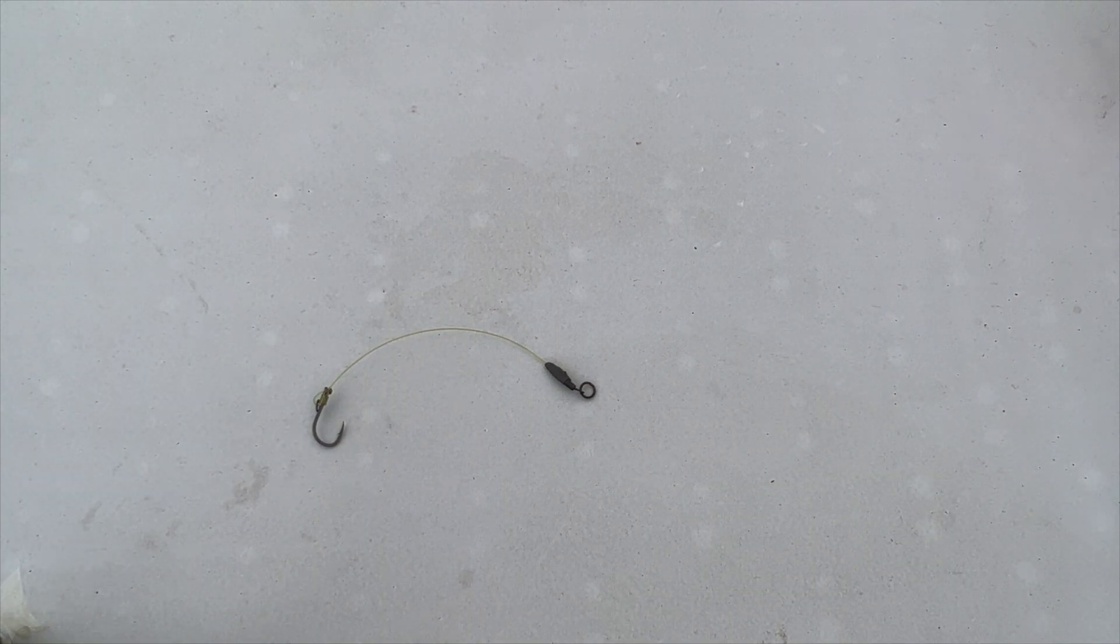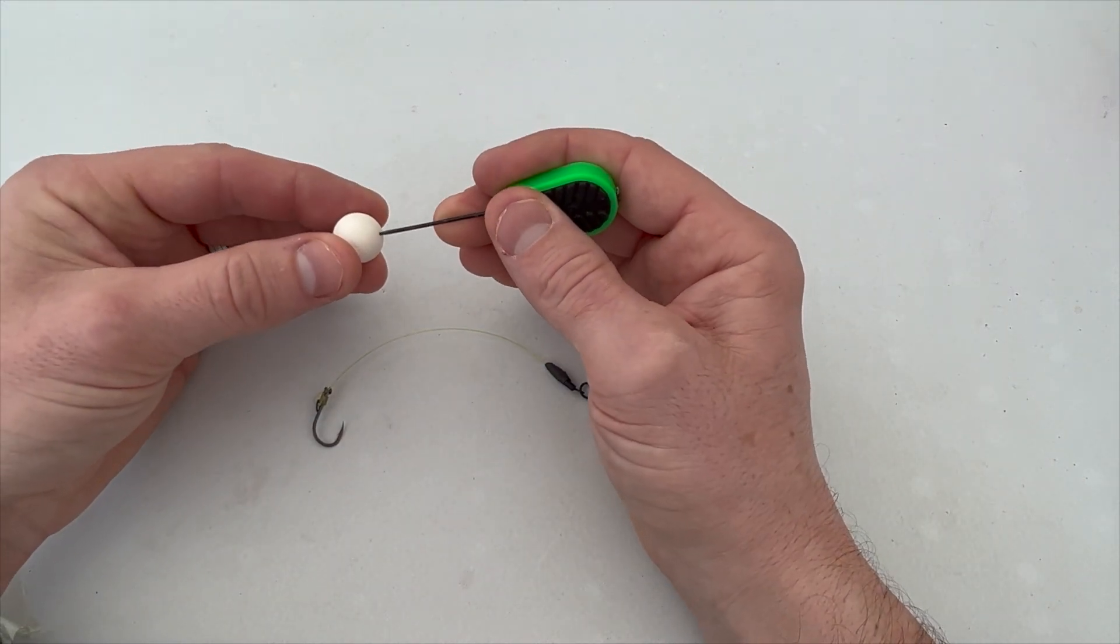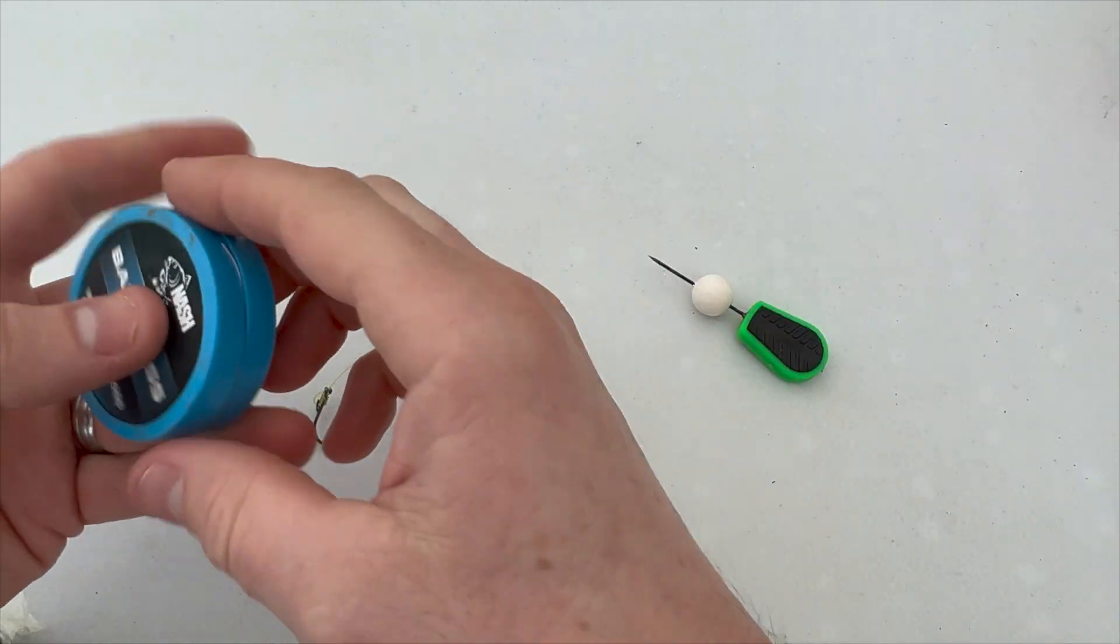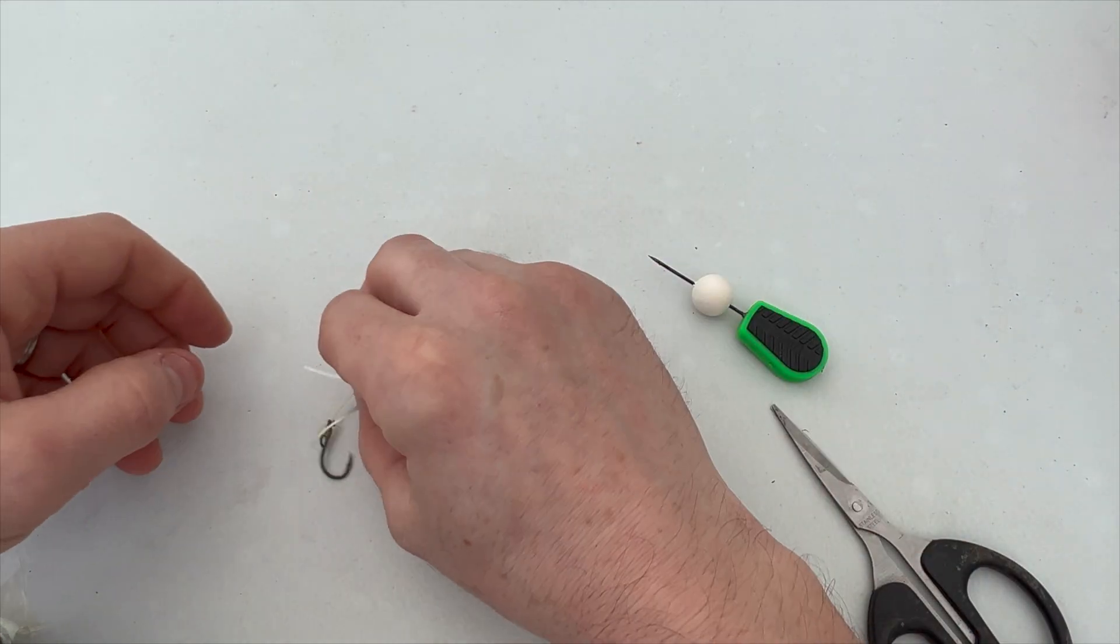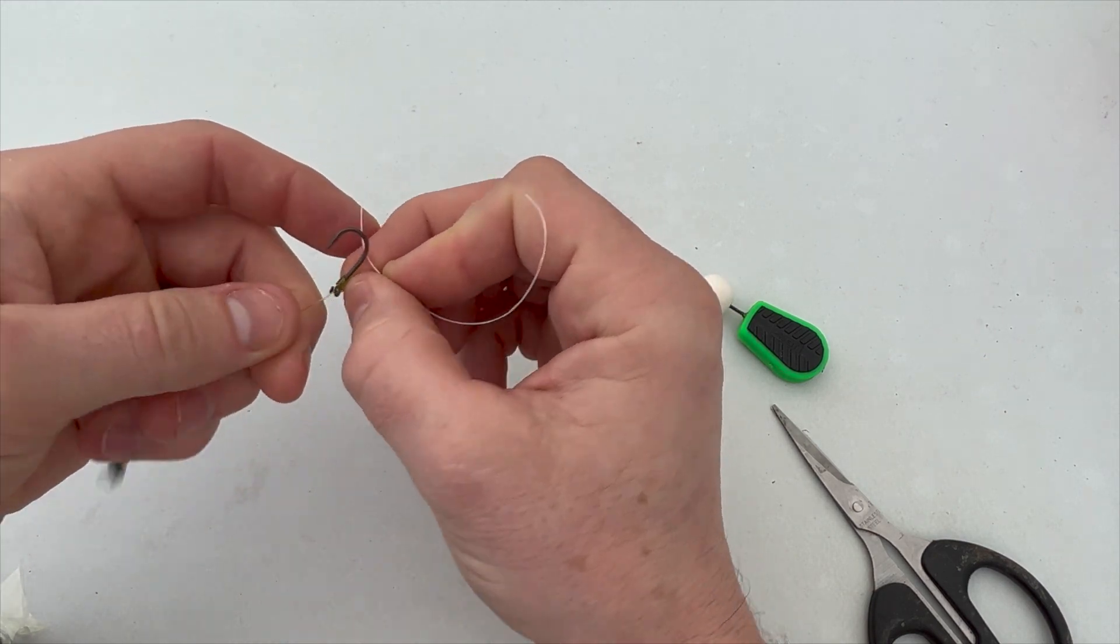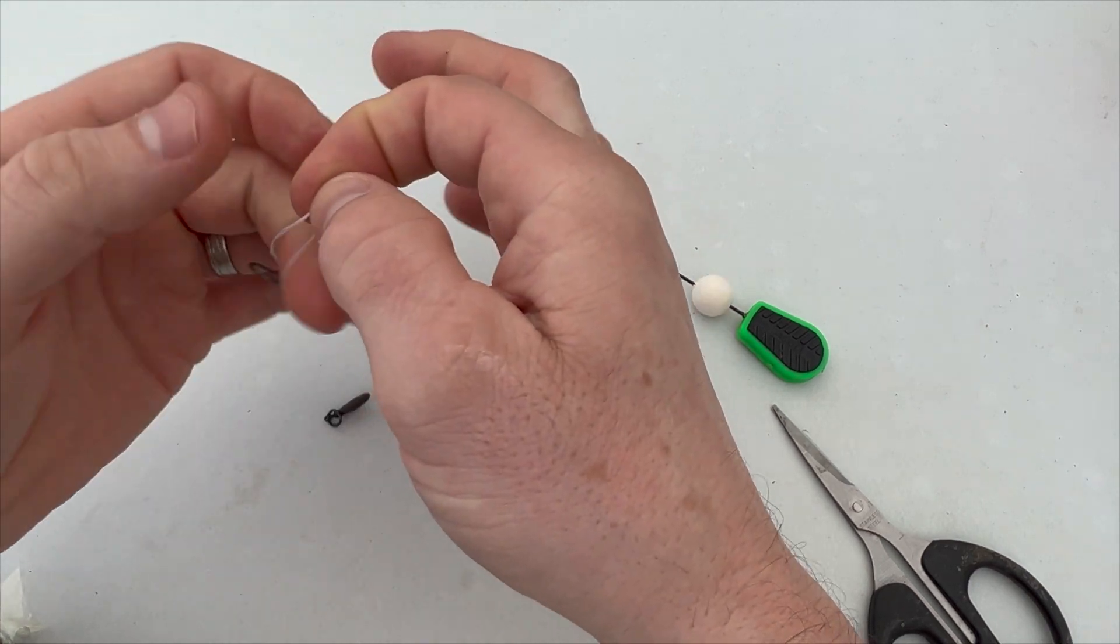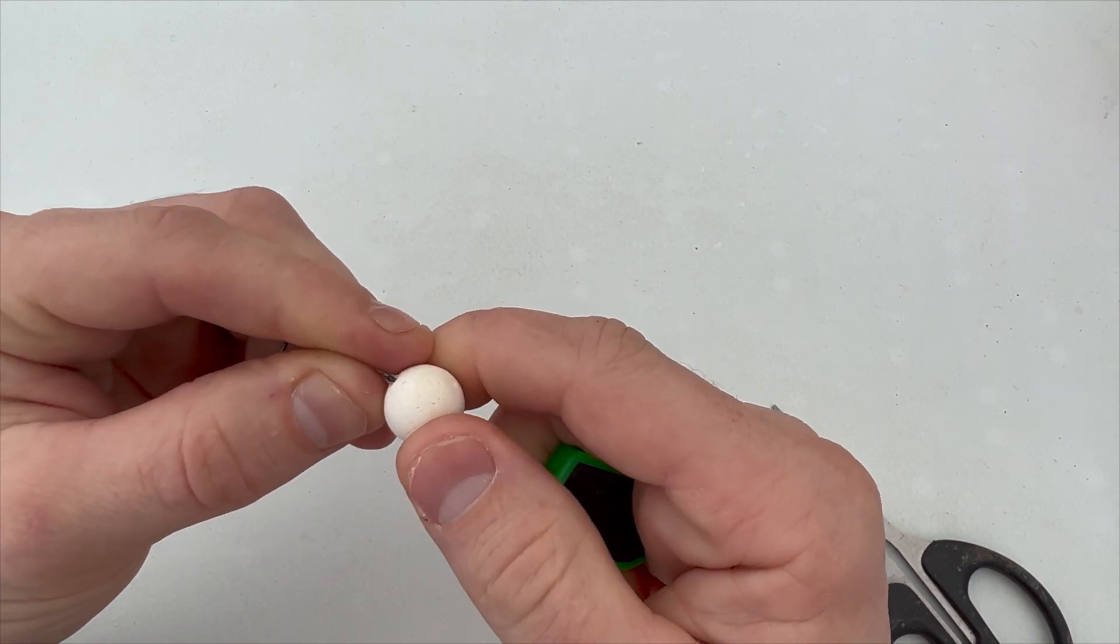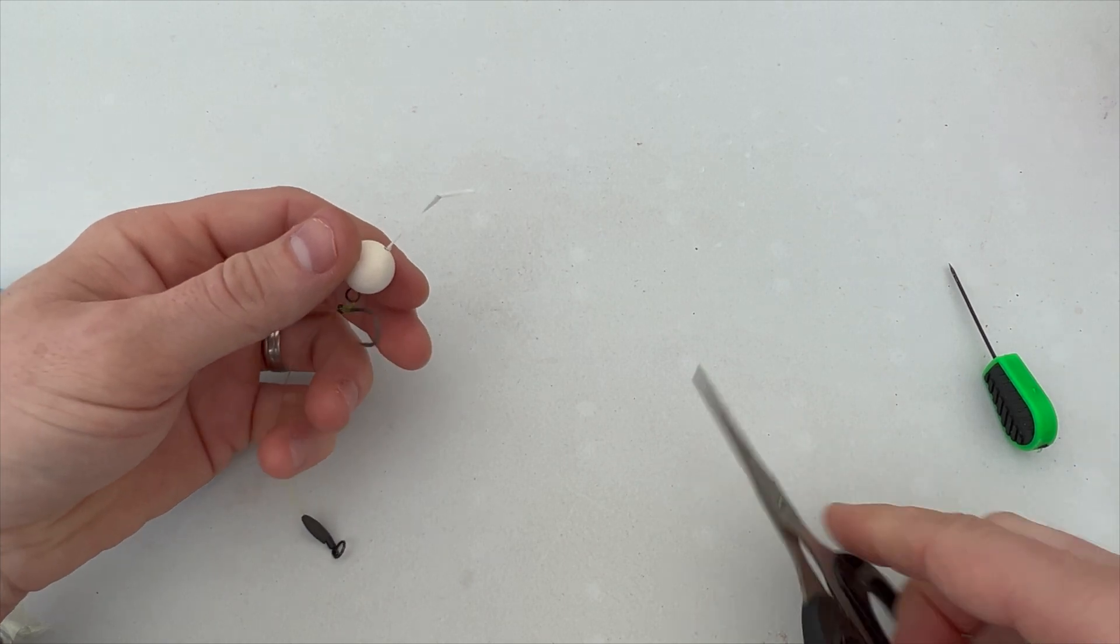We then take our chosen hook bait which here is going to be a 15 mil popper and take, thread it onto our boiling needle. Do not stab yourself because it hurts. A little bit of bait floss. Now I thread it through the eye, some people tie it on, I thread it through the eye, grab the two ends, and just slide that on over, pull it through so it sits there like that.